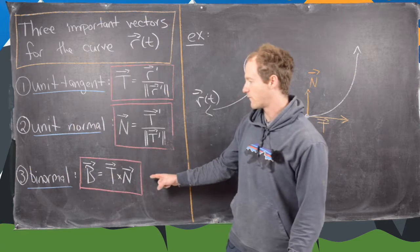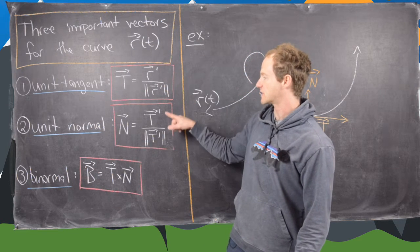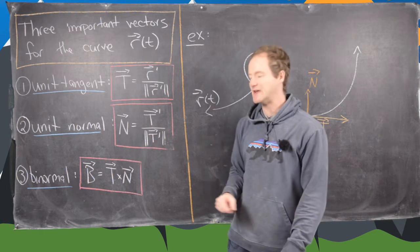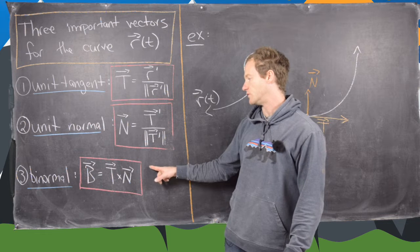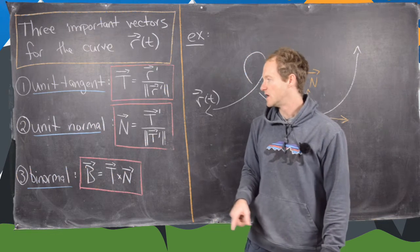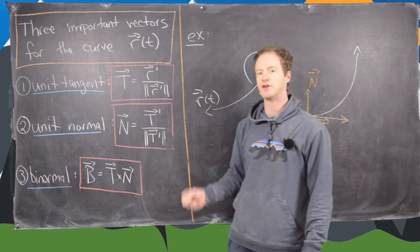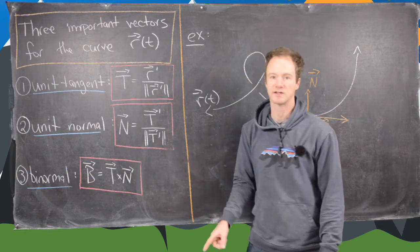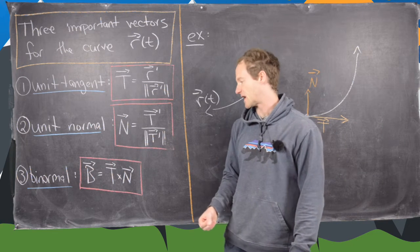One more thing before the example. You might ask whether the binormal vector is already a unit vector or needs to be normalized. It's already a unit vector, given that we are taking the cross product of two unit vectors that are orthogonal to each other. Think about the formula involving the cross product and the sine of the angle between the vectors.